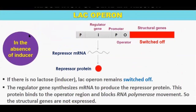In the absence of inducer — if there is no lactose, that means no inducer — the lac operon will be switched off. If an organism is not having lactose, the lac operon will remain switched off. The regulatory gene synthesizes mRNA to produce the repressor protein. This repressor protein binds to the operator region and blocks the RNA polymerase movement. As a result, the structural genes are not expressed.